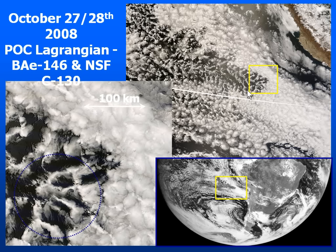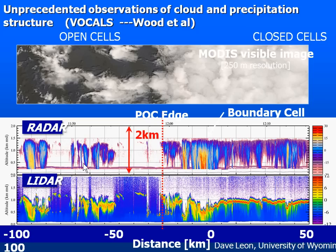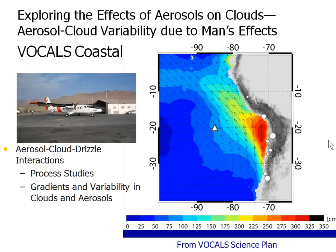One of the things they were looking at were these pox areas. They found open cells and closed cells, and here's the Wyoming King Air radar showing the differences in cloud characteristics in these different areas. They were also able to find very large differences in aerosol concentrations, with some ultra-clean air along some of these edges. I'd point you to the paper Rob presented yesterday, and there's also one in Atmospheric Chemistry and Physics on this.